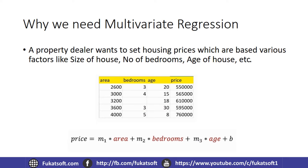We can map the real-world features to the multivariate regression equation: area is x1, bedrooms is x2, and age is x3. Price (y) is our output variable. m1, m2, m3 are the coefficients, and b is the y-intercept — a constant with no direct effect on the prediction. This is how we explain multivariate regression in terms of predicting house prices.